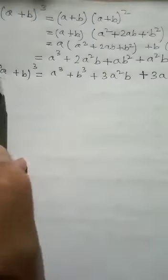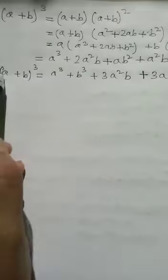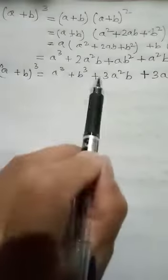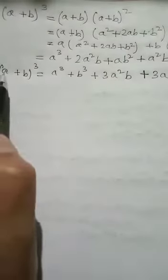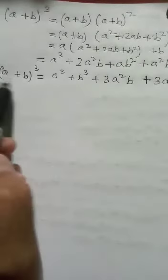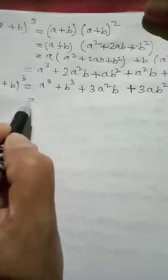So (a+b)³ = a³ + 3a²b + 3ab² + b³. If it is a cube, we have cube of a and cube of b. Then with coefficient three: first we square a and leave b, then in the second part we leave a and square b. That is the easy way to remember this formula.